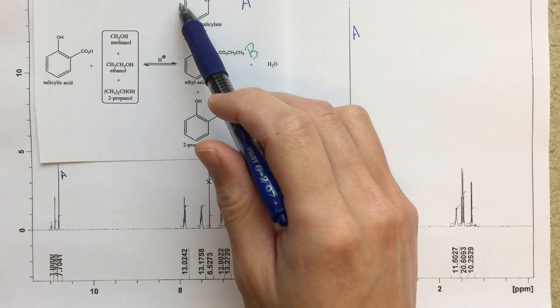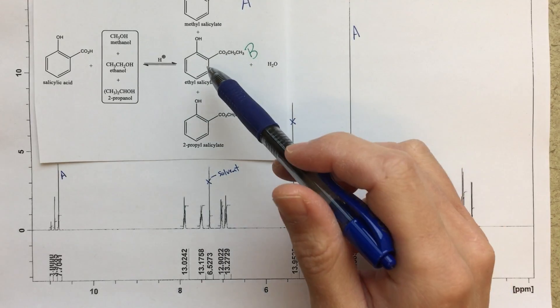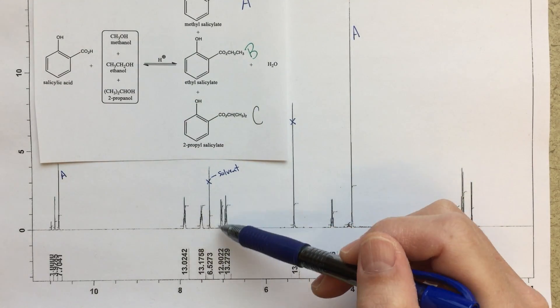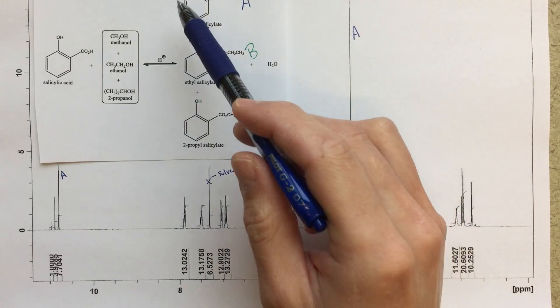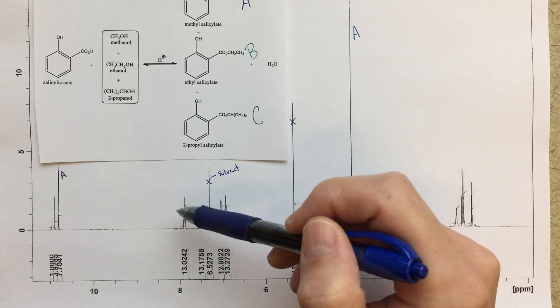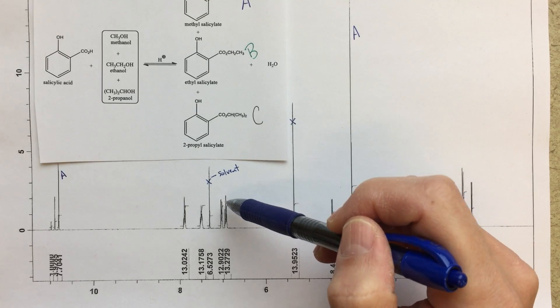In the aromatic region, each one of these should give four signals, four different signals in the aromatic region. And all of these are going to be mixed together. So all of these peaks that we're seeing in the aromatic region, I would expect all four of these to be mixed together.